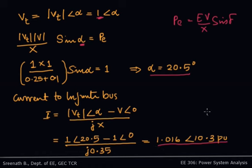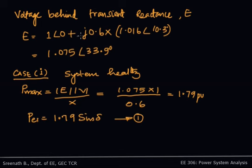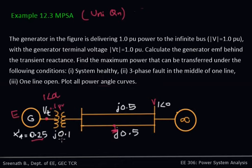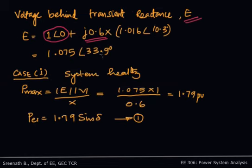This gives I = 1.016∠10.3° per unit. Now we calculate the voltage behind the transient reactance, E. E is given by the infinite bus voltage 1∠0° plus the total reactance between E and V — that is 0.25 + 0.1 + 0.25 (the resultant of the two parallel lines) = 0.6 — multiplied by the current. This gives E = 1.075∠33.9°.